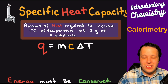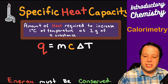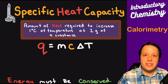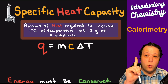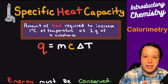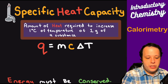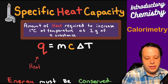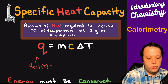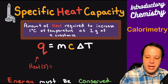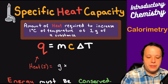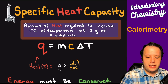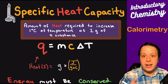Let's remember what specific heat is all about. The specific heat capacity is the amount of heat required to increase the temperature of every gram of a substance by one degree. I call this the mcat equation — heat in joules equals mass in grams times specific heat, which has units of joules per gram per Celsius.